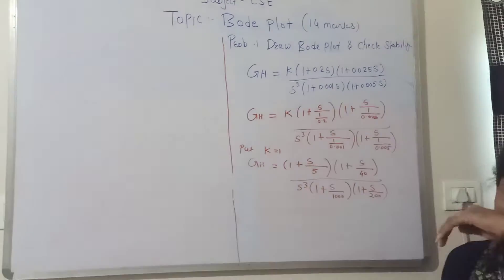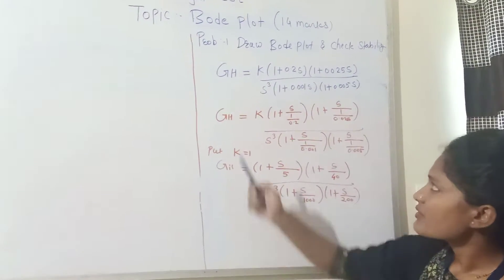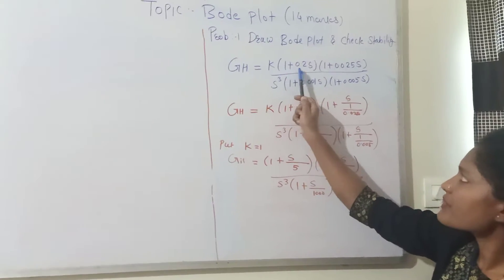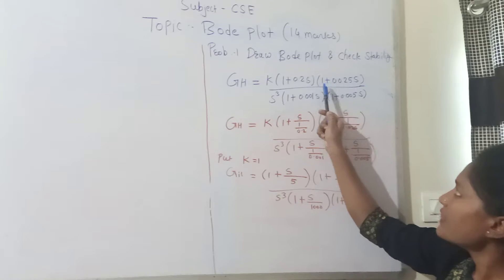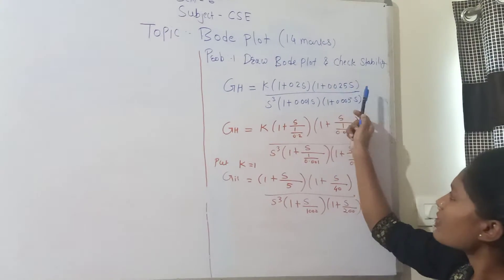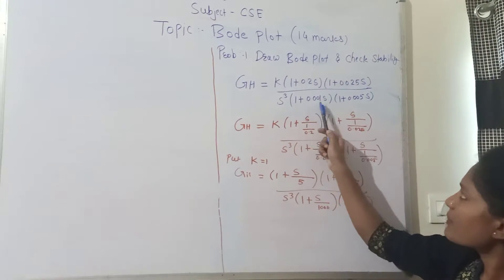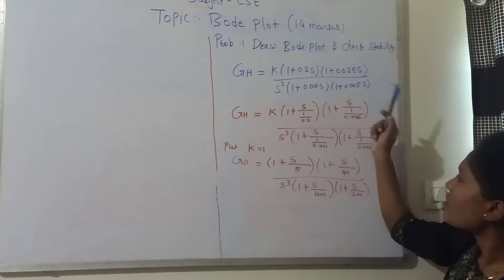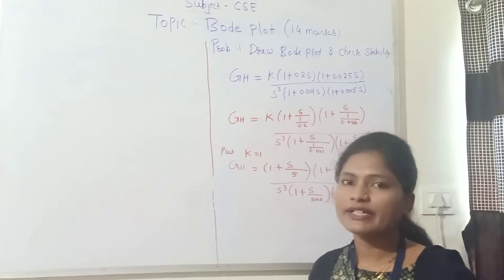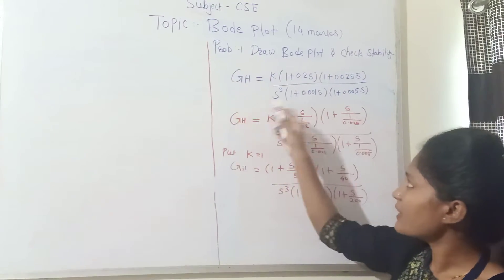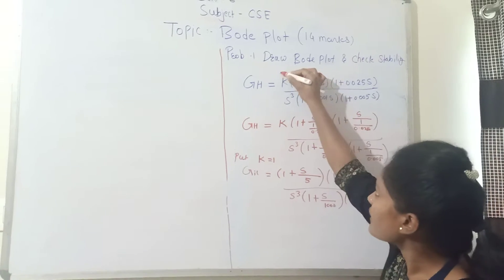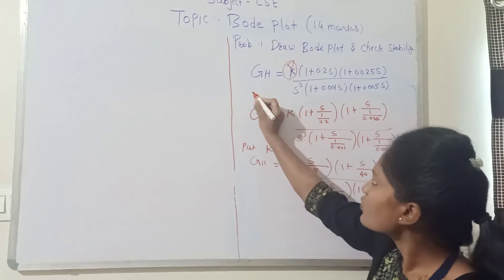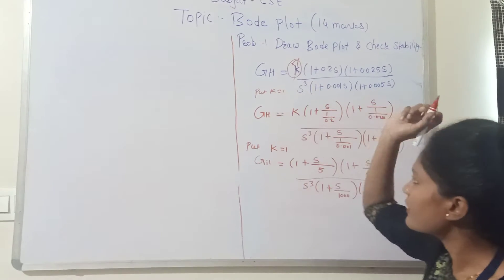Here I consider a numerical from the university. The transfer function is: GH equals k into (1 + 0.02s)(1 + 0.025s) upon s cube into (1 + 0.001s)(1 + 0.005s). If there is a k in this transfer function, we have to remove it by putting k equal to 1.